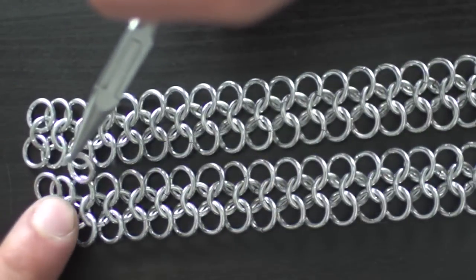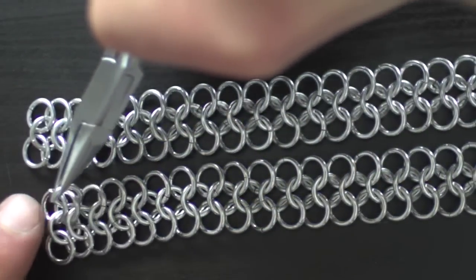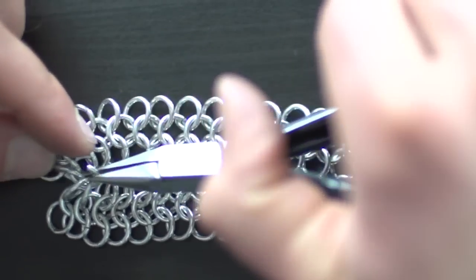Now we're going to attach them together. Following the direction of the rows, weave these chains together until you have a sheet.